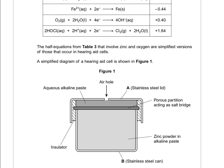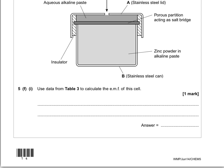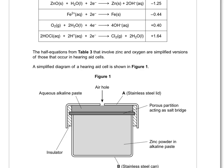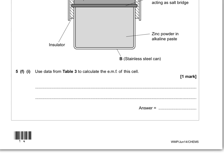There's a simplified version of the half equations from table 3 involving zinc and oxygen that occur in the hearing aid cell. Work out the EMF of the cell. It's between zinc and oxygen: the difference between −1.25 and +0.40 is −1.25 − 0.40 = −1.65 V. If you put +1.65 you'd still get the mark, so either ±1.65 V.